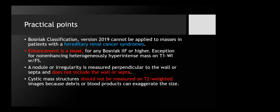Some practical points I find useful: to apply Bosniak, the patient should not have any hereditary renal cancer syndrome — including von Hippel-Lindau, tuberous sclerosis, and so forth. We cannot apply Bosniak to these patients. Enhancement is a must for any Bosniak 2F or higher. The exception is the non-enhancing heterogeneously hyperintense mass shown in my cases. A nodule or irregularity is measured perpendicular to the wall and should not include the wall or septa.